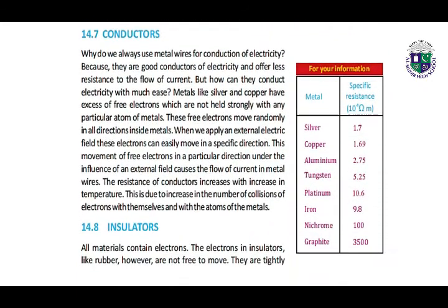Our next topic is about conductors. Why do we always use metal wires for the conduction of electricity? Because they are good conductors of electricity and offer less resistance to the flow of current. Metals like silver and copper have excess of free electrons which are not held strongly with any particular atom. These free electrons move randomly in all directions inside metals. When we apply an external electric field, these electrons can move in a specific direction. This movement of free electrons in a particular direction under the influence of an external field causes the flow of current in metal wires.